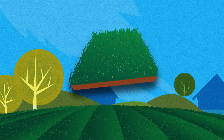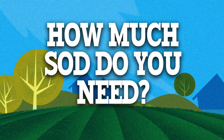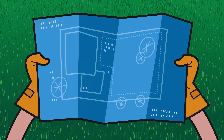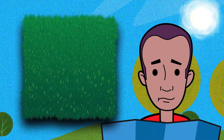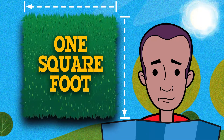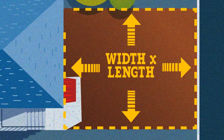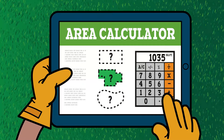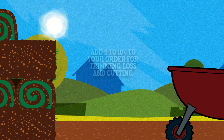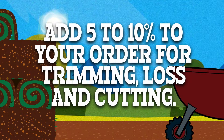Choosing sod is the easy choice and the right choice. But how much sod do you need? That depends on one thing only — the size of the area you want to cover. To calculate this, measure in feet, as sod is typically sold by the square foot. If you have a typical square or rectangular yard, this is a simple multiplication of the width and length of your area. There are many online tools to help you calculate the surface area if needed. I'd recommend adding 5 to 10 percent to your order to account for trimming, loss, and cutting.